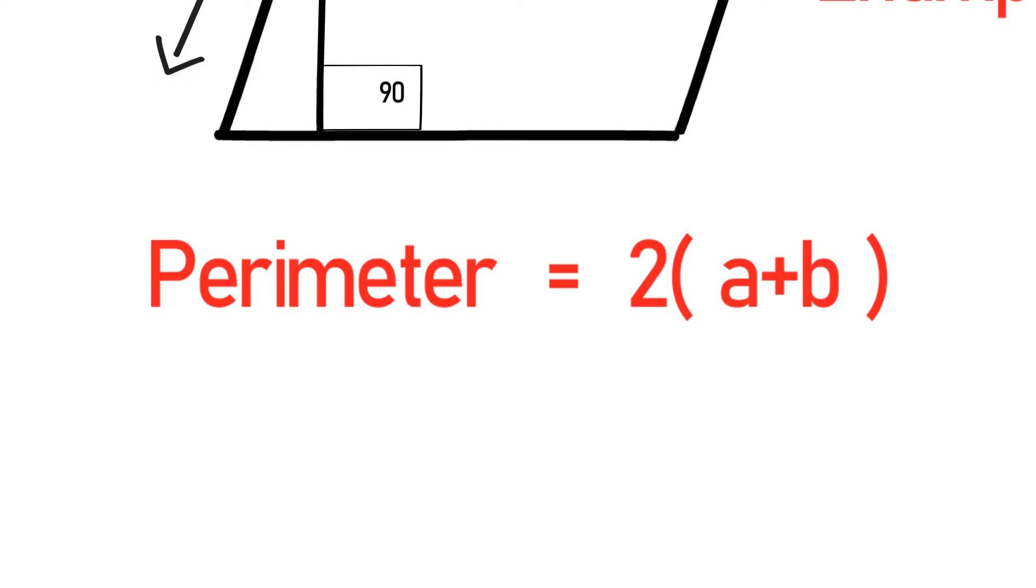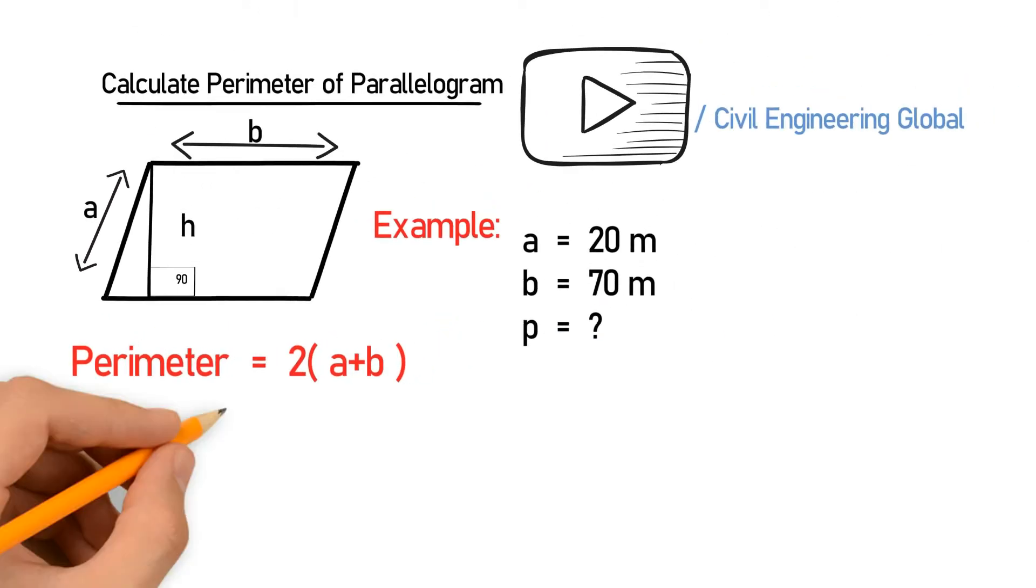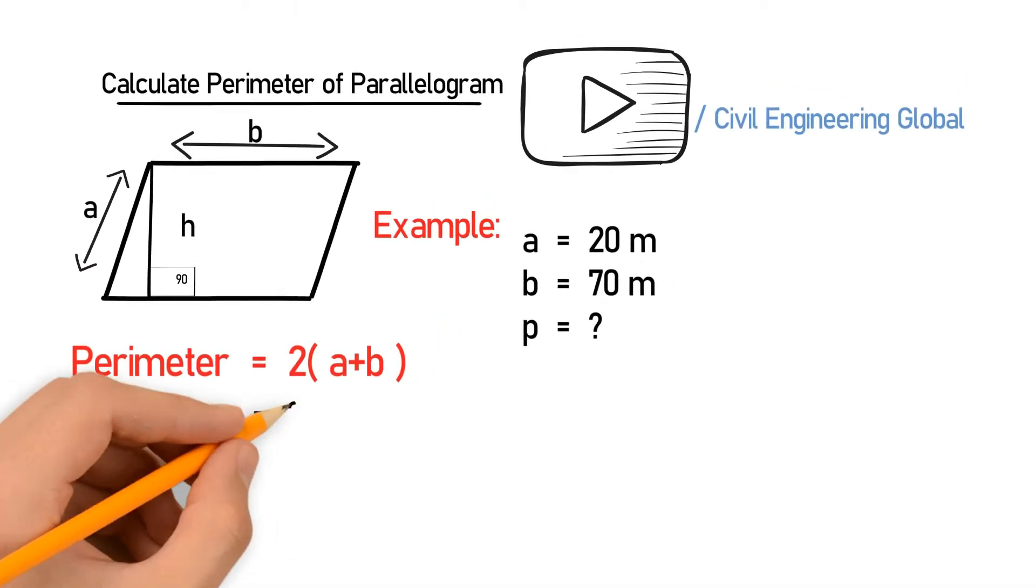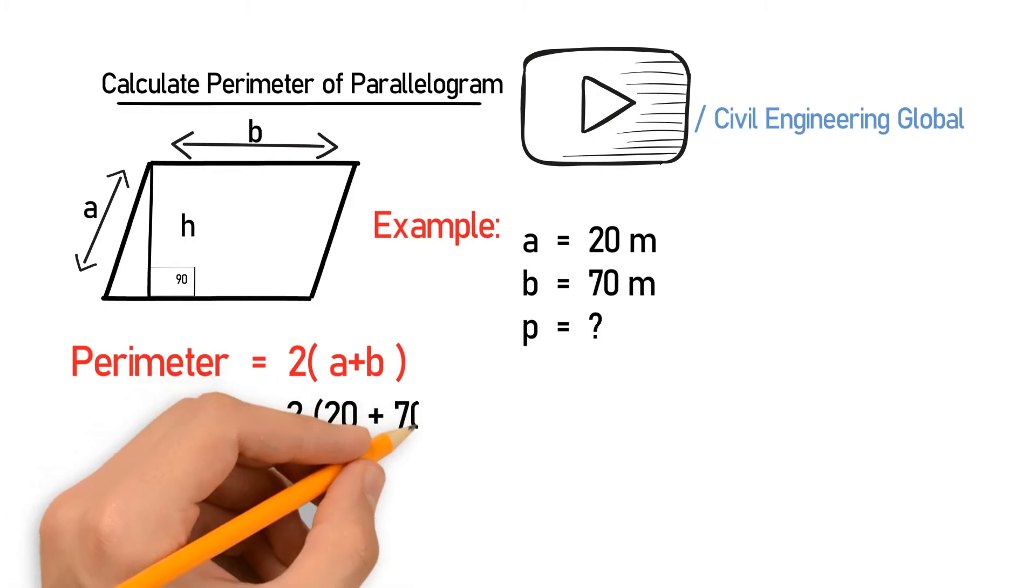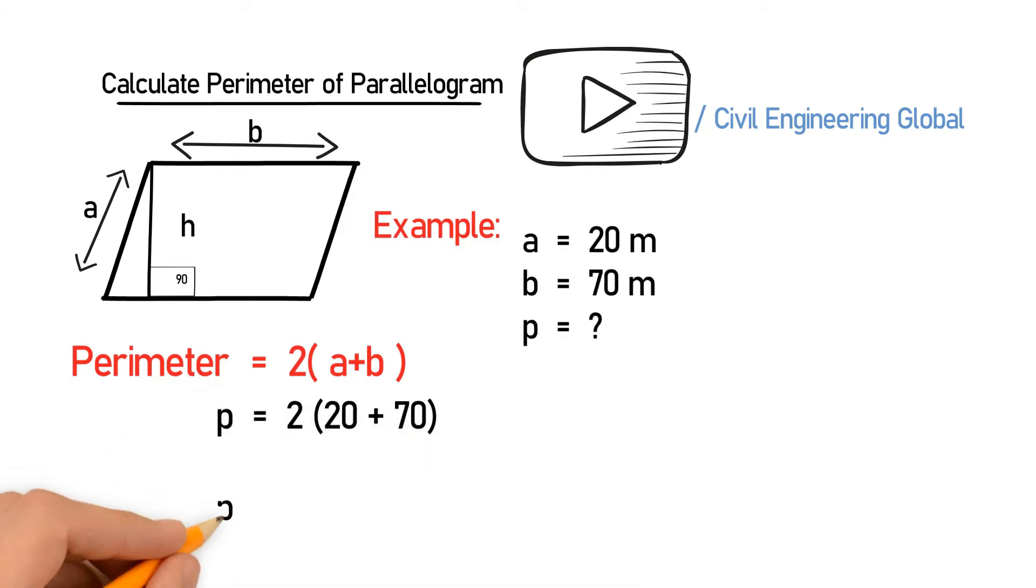Let's put the value of a and b. P is equal to 2 multiplied by 20 plus 70. So after calculating this, you will get the parameter is equal to 180 meter.